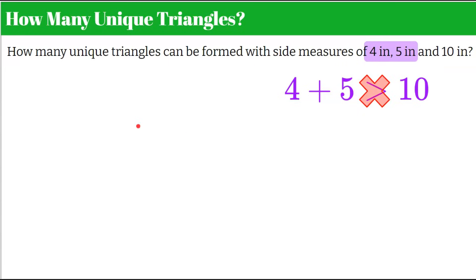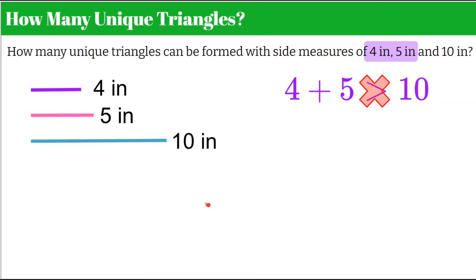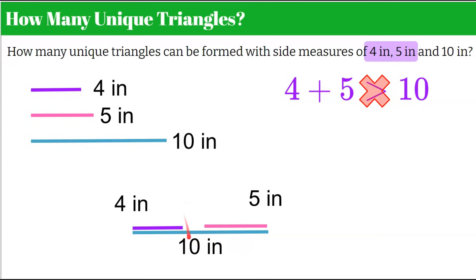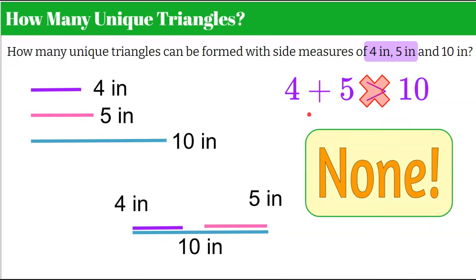Let's look at this visually. If we draw a segment that's four inches, one that's five inches, and one that's ten inches, starting with our longest side, and prop up a four-inch segment and a five-inch segment — if I had these like straws and went to try to meet the four and the five together to form a vertex, the four and five would just collapse because four plus five is nine and there's that other inch in the middle. They're not big enough to make that angle. The four plus five has to be greater than ten so that when they fall in, they meet before they hit the ten. So the answer is none — no unique triangles can be formed from these side measurements.